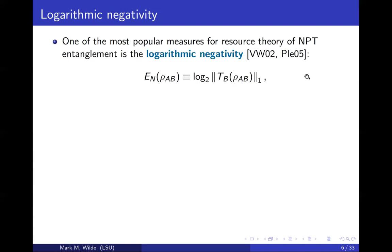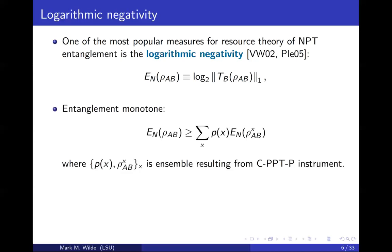If you evaluate this for a maximally entangled state with Schmidt rank d, this would be equal to log d. For a simple Bell state of two qubits, this evaluates to one — you can think of it as having one ebit of entanglement. This measure was introduced independently by Vidal and Werner and Plenio. What Plenio did was prove that the entanglement monotonicity — the LOCC monotonicity — holds. This is actually slightly stronger than what we stated earlier.